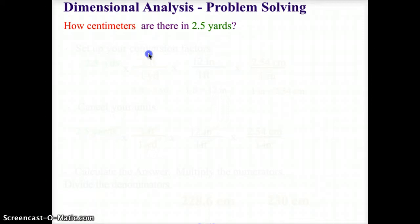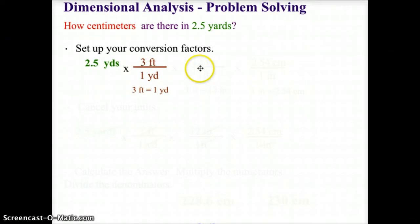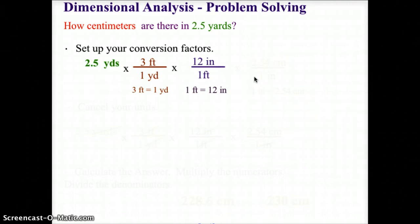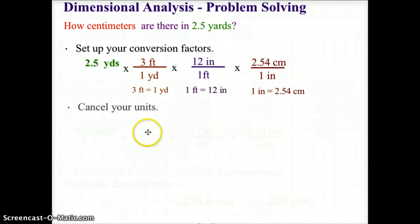Welcome back. Let's take a look at how we did. We're going to start with 2.5 yards, and our first conversion factor is 3 feet equals 1 yard. Our second conversion factor is 12 inches per one foot, and lastly we use 2.54 centimeters for every one inch. Hopefully that's what you have on your paper.